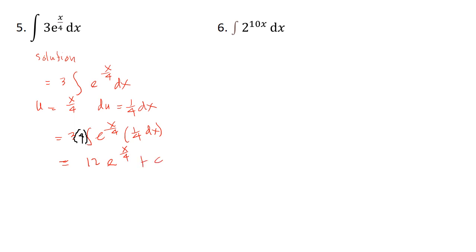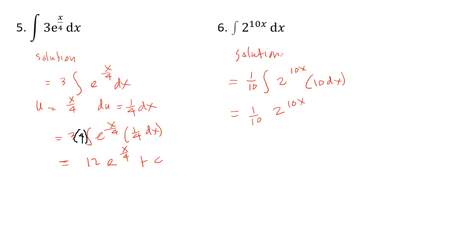Number 6: integral of 2^(10x) dx. This can be solved as (1/10) integral of 2^(10x) · 10 dx, which equals (1/10) · 2^(10x) over ln(2) plus C, or equivalently 2^(10x) over 10·ln(2) plus C.